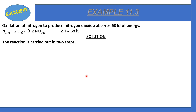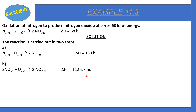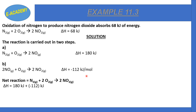This reaction is carried out in two steps for the formation of nitrogen dioxide. Step 1: N₂ + O₂ → 2NO, with a certain delta H. Step 2: Adding both reactions A and B, the net result gives N₂ + 2O₂ → 2NO₂ and delta H = 68 kJ.